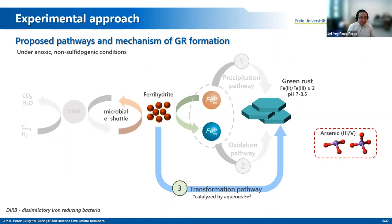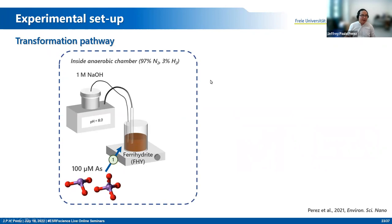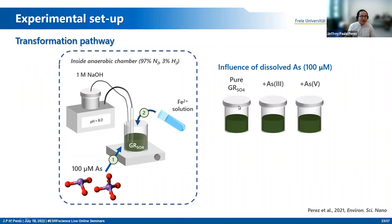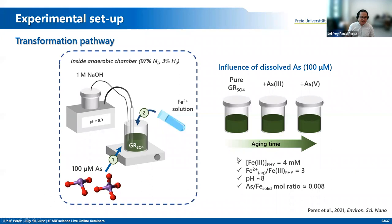This leads us to look at the transformation pathway. We start from poorly ordered oxyhydroxide — in this case ferrihydrite. The experimental setup is again done inside the anaerobic chamber. We start with ferrihydrite, add arsenic to it, equilibrate for 24 hours, and then add iron(II) to trigger the transformation to green rust. Once the green rust is formed, we monitor what happens to the green rust solids as it ages over a period of 30 days. These are the conditions wherein we synthesize green rust with or without arsenic.